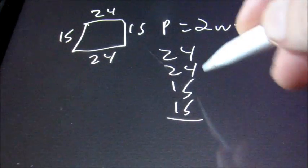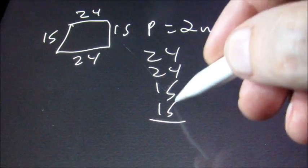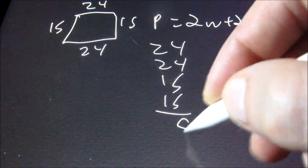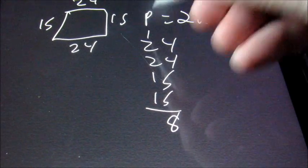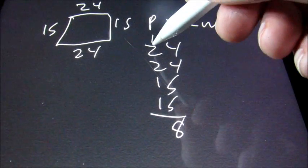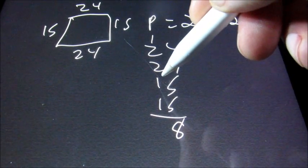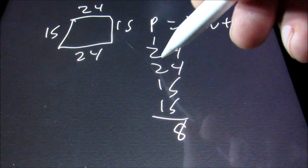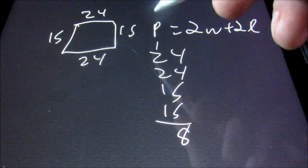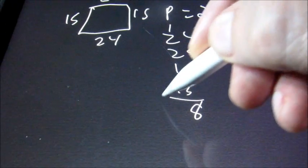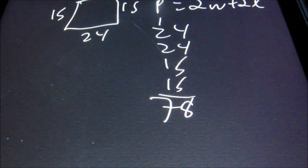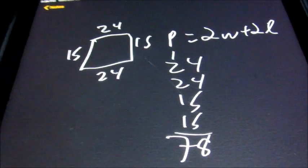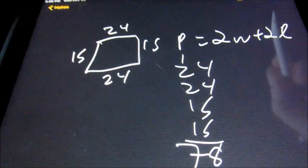Add these up: 5 and 5 is 10, plus 8 is 18. Carry the 1. 1 plus 1 is 2, plus 2 is 4, plus 2 is 6, plus 1 is 7. So the perimeter is 78. You're going to get some problems that are just rectangles like that.